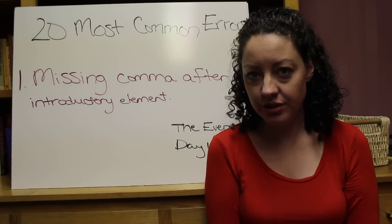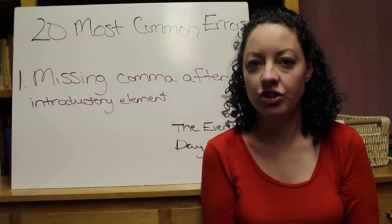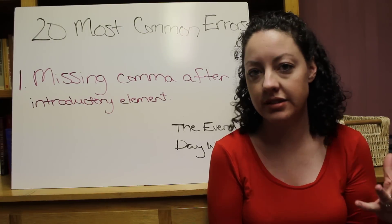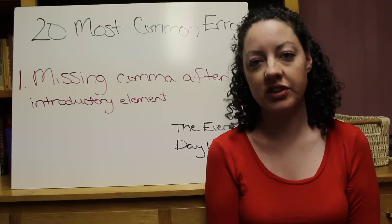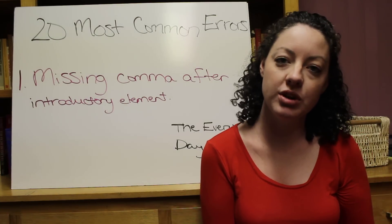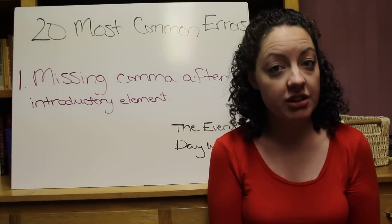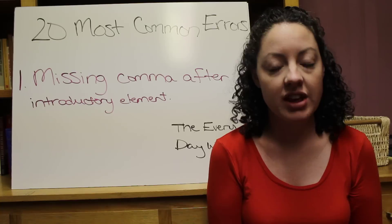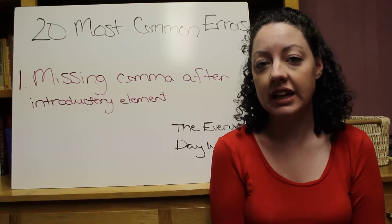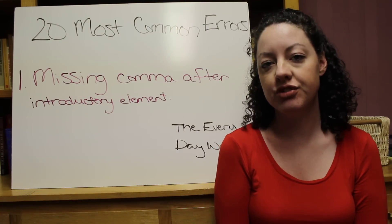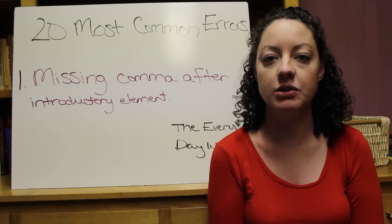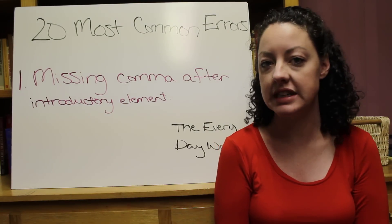English can be a very confusing language and the rules are endless. There are so many rules and different strange words because our language is a combination of many different languages and it tends to change over time. So when writing, it can be frustrating trying to remember all of these rules and names of the things that we put into our sentences.